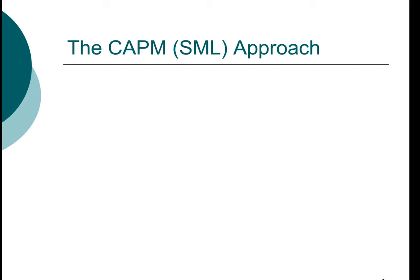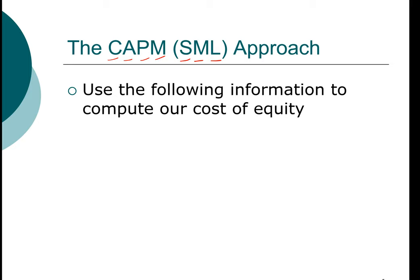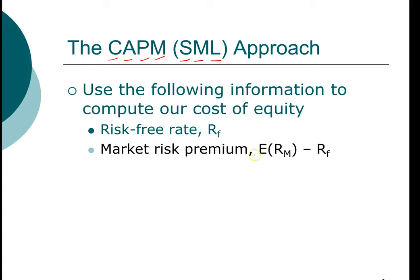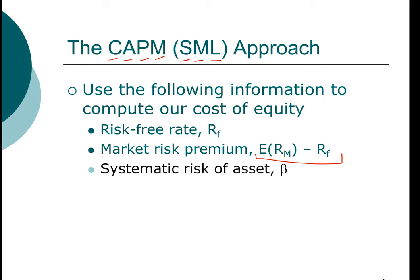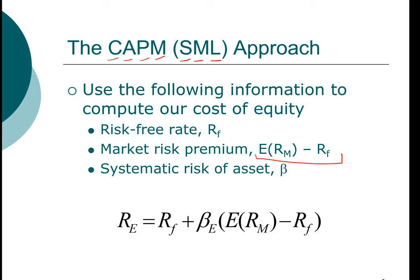Fortunately, we have a second approach: the capital asset pricing model, or CAPM, also known as the security market line. In order to estimate the cost of equity using CAPM, we need three basic factors: one, the risk-free rate; two, the market risk premium, defined as the difference between the expected market return and the risk-free rate; and three, the systematic risk of the asset. The required return on equity equals the risk-free rate plus the beta of equity times the market risk premium, where E stands for equity or common stock of the firm.